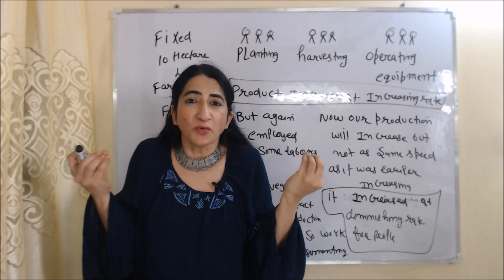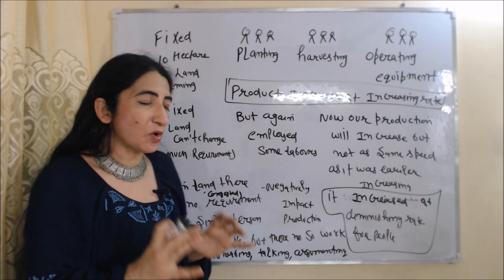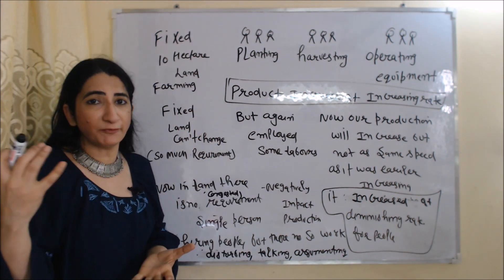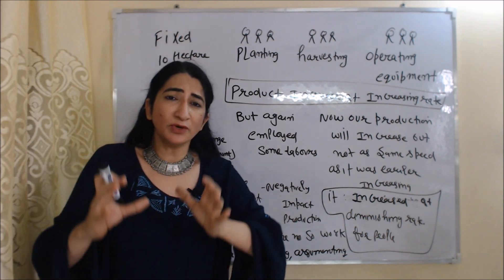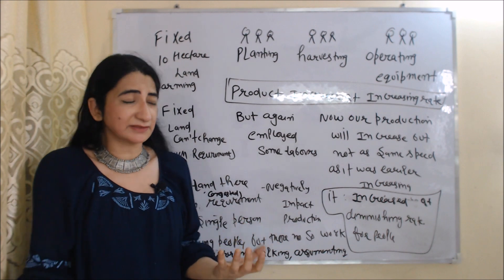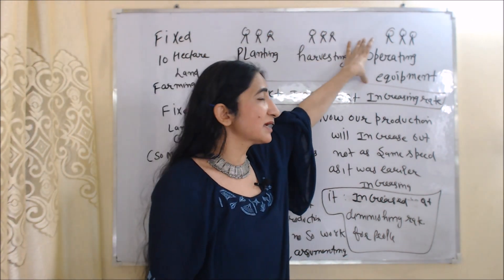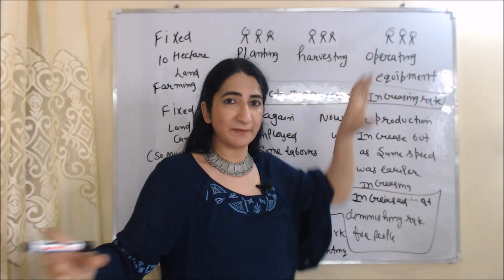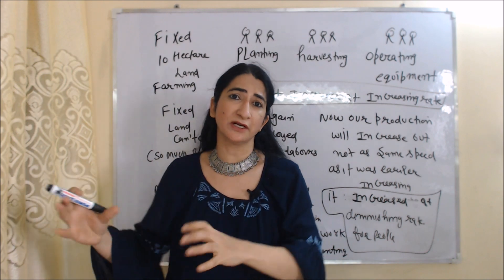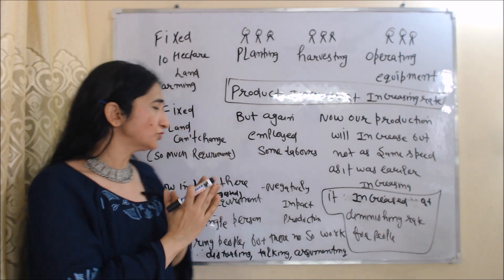This law states that if we employ more and more units of labor on a fixed amount of land, how will it affect our production? Let's understand with an example. Suppose we have 10 hectares of fixed land for farming. Initially we hire labor — some working in planting, some in harvesting, some operating equipment. As a result, our production increases at a very high speed, meaning initially production increases at an increasing rate.